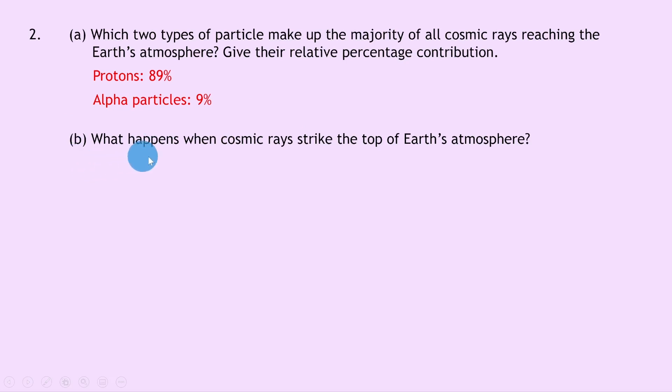And lastly part b says what happens when cosmic rays strike the top of the earth's atmosphere? Well remember when cosmic rays strike the top of the earth's atmosphere, a cosmic air shower is produced. This is a shower of secondary particles including electrons, photons, neutrinos and muons.